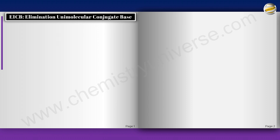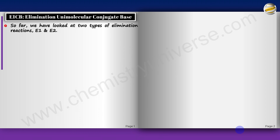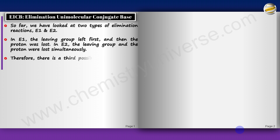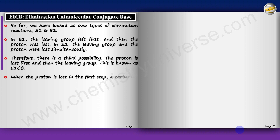E1CB stands for elimination unimolecular conjugate base. We are talking about a conjugate base here. When the proton is lost in the first step, a carbanion is formed. So far we have looked at E1 and E2; now E1CB is the third possibility — the proton leaving first and then the leaving group leaving.